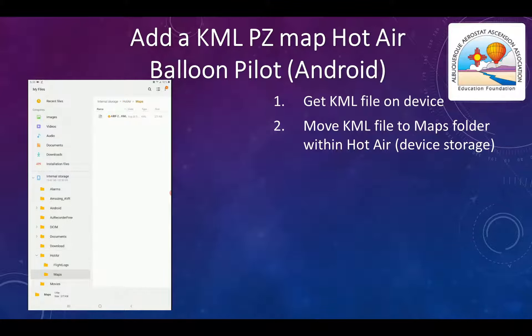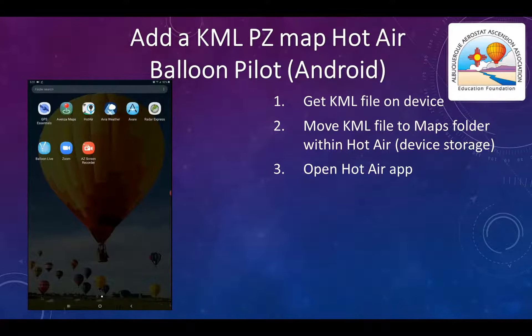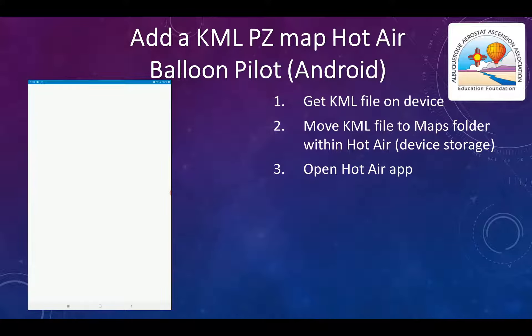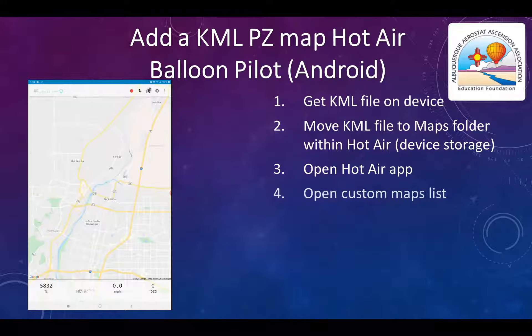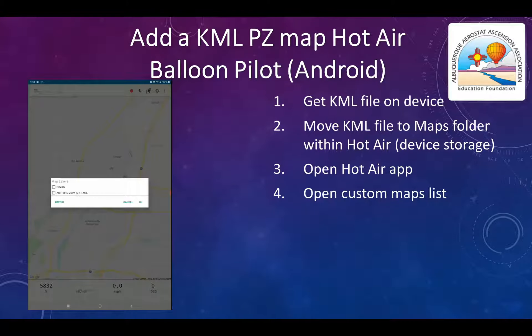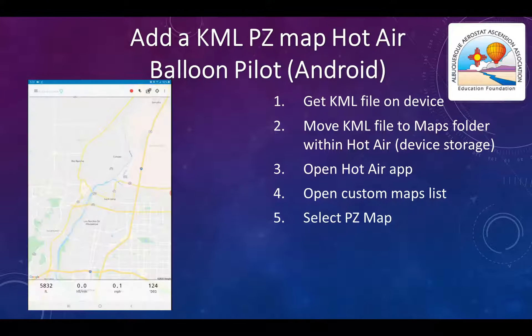Once we've saved the file in the Maps folder, we can start the Hot Air app. In the app, there are five icons at the top right-hand side of the screen. Select the center icon to open the custom Maps list, select our PZ map, and return to the screen.